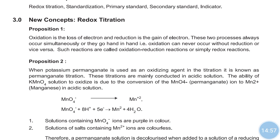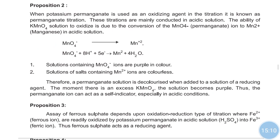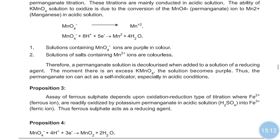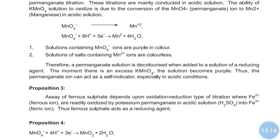In acidic medium, KMnO4 is oxidized due to the conversion of MnO4 minus — that is the permanganate ion — to Mn2+, that is the manganese ion.